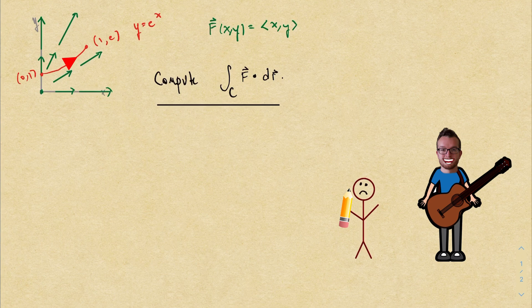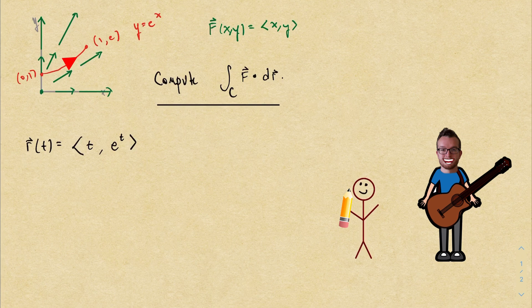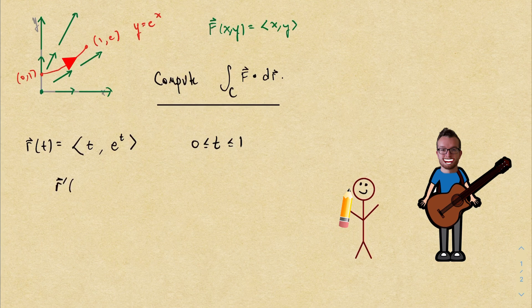Take the curve, parameterize. Don't feel bad if it takes three tries. Make sure that you pick a T domain. Before you go and compute r prime, pump the brakes and take some time to check the orientation is the same.